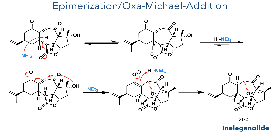The researchers found that they could also transform Scabralide B into ineleganolide, by reacting it with triethylamine in a mixture of acetonitrile and methanol at 60 degrees for 22 hours. This first deprotonates alpha to the lactone, and promotes an intramolecular oxa-Michael addition into the enone system, forming an ether. Reprotonation of the resulting enolate generated ineleganolide in a 20% yield.